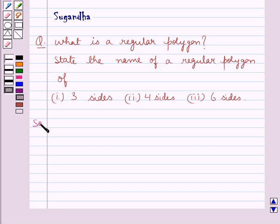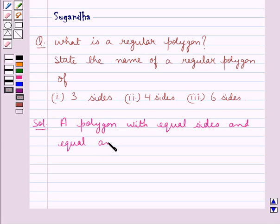Now let's see the solution. A polygon with equal sides and equal angles is called a regular polygon.